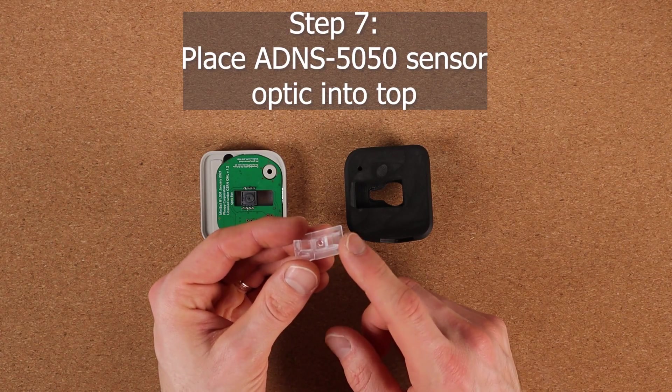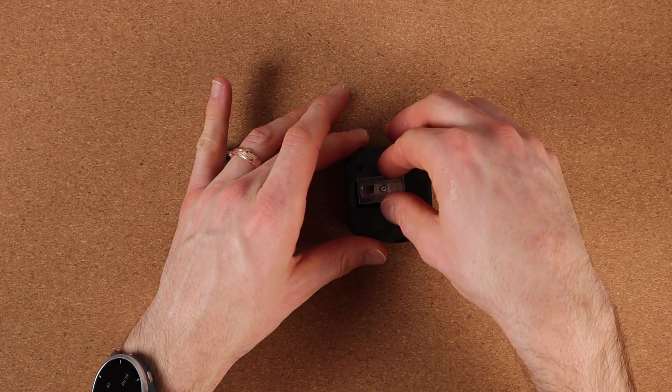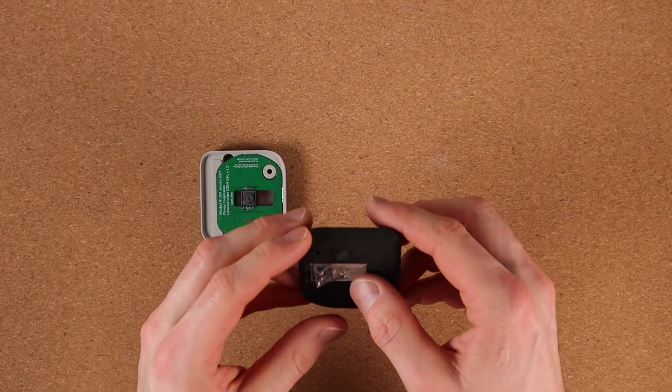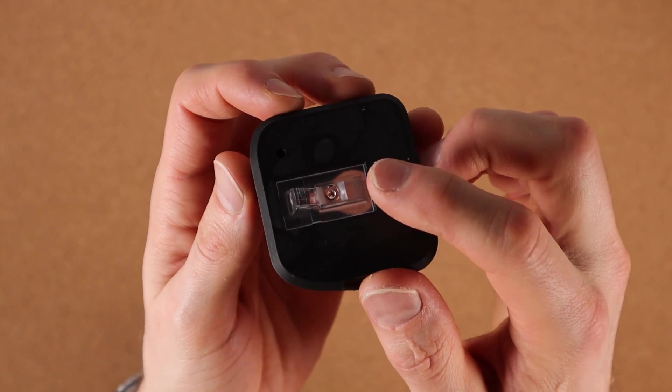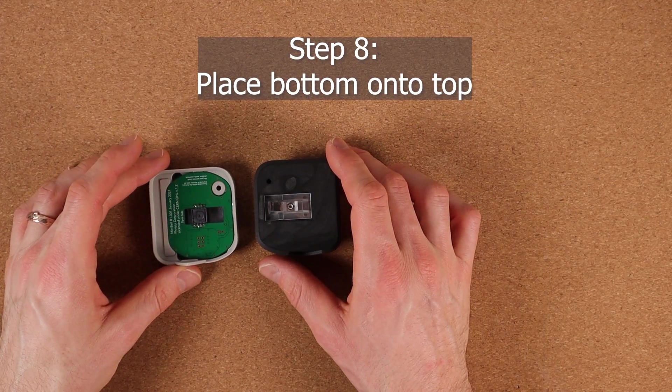Step seven is to insert the sensor optic into the top. So you just put it down into there. So right now it's sitting in there just loosely.